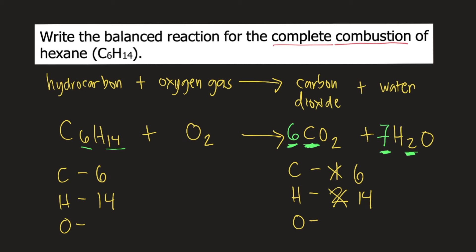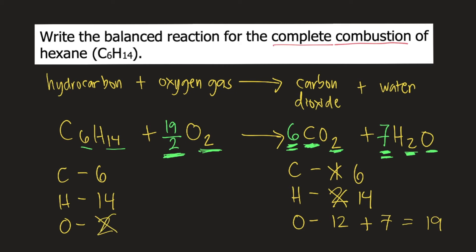Finally, we balance oxygen. On the left side we have 2 oxygens. On the right side we have 6 times 2, that's 12, plus 7 times 1, that's 7 — so 12 plus 7 equals 19 oxygens. To balance oxygen, we put the coefficient 19/2 on oxygen gas, because 19/2 times 2 equals 19. So oxygen is already balanced.